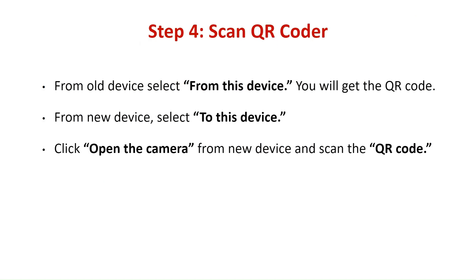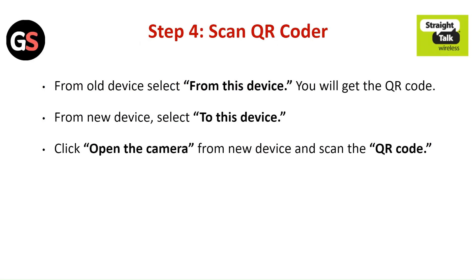Step 4: Scan the QR code. On the old device, select 'From this device' to get the QR code. On the new device, select 'To this device,' open the camera, and scan the QR code.